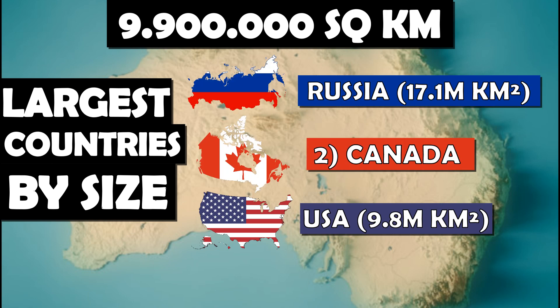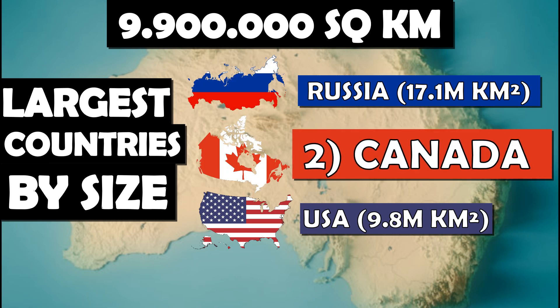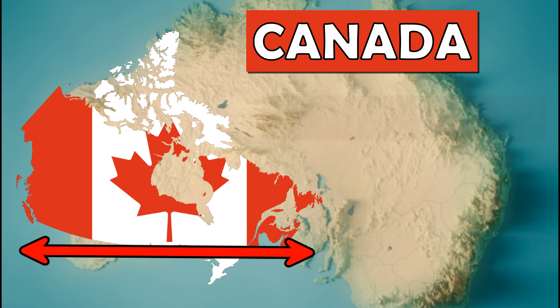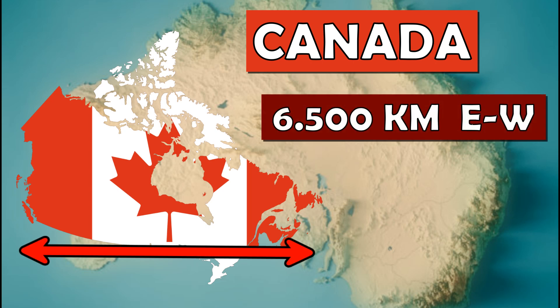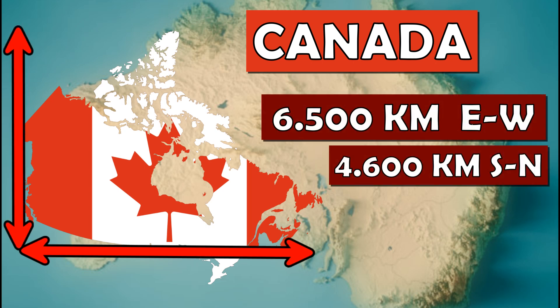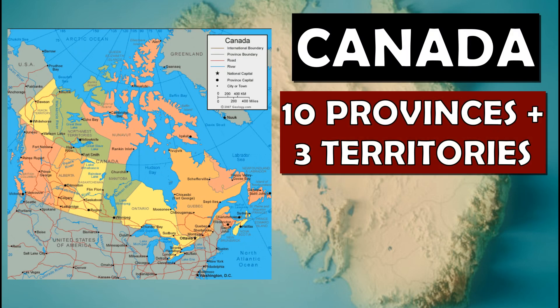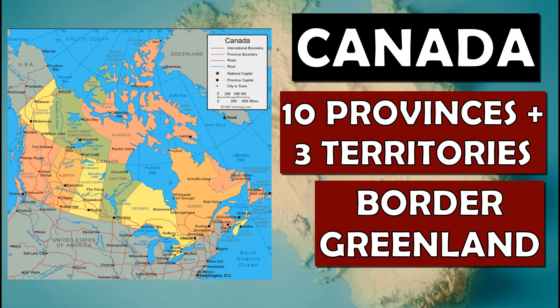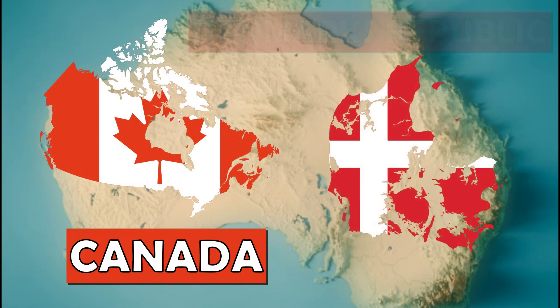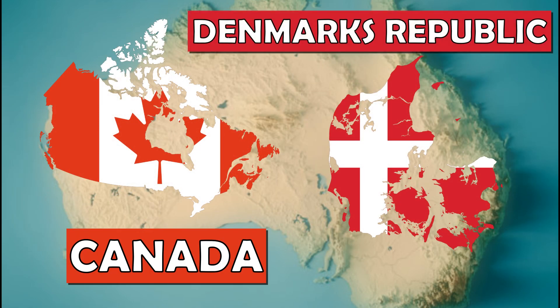Canada is the second largest country in the world, having almost 10 million kilometers squared. It is about 6,500 kilometers east to west and 4,600 kilometers north-south from the US border. Canada is divided into 10 provinces and 3 territories, and it shares a border with Greenland since June 14, 2022, meaning it shares a border with Denmark's republic.